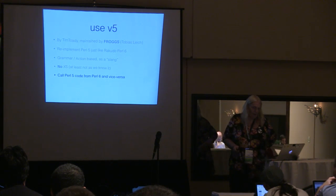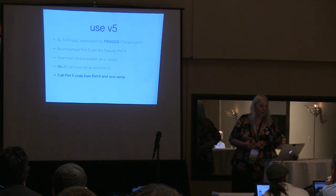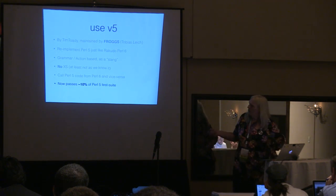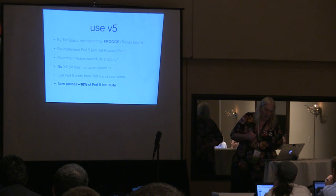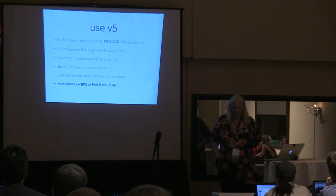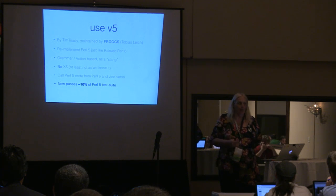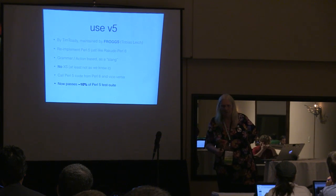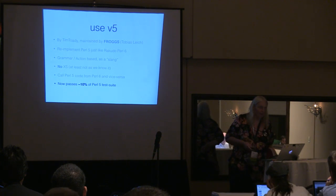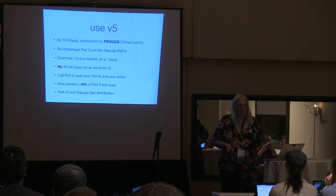That's going to be the big thing for migrating people from Perl 5 to Perl 6. It actually passes 10% of the Perl 5 test suite at the moment. This number is very skewed because any test in the Perl 5 test suite that has a 'skip' in it does not work yet. Skip actually uses goto, and for goto you need labels. Labels we now have in Rakudo Perl 6, and goto we don't have just yet but it will come. And v5 will actually be part of the next Rakudo Star distribution.